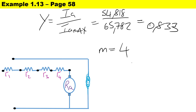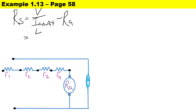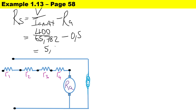Now that we have the ratio and the currents, we can calculate the total starting resistance. It is V over Ia_max minus Ra: the terminal voltage is 400 volts, the maximum armature current is 65.782, and the armature resistance is 0.5 ohms. The total starting resistance is 5.581 ohms.